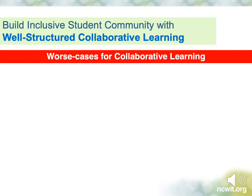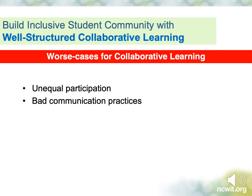So what are some worst-case scenarios? Why can't you just throw students into groups, give them a project, and let them work it out? First, some individuals may dominate the conversations and the work, while others may opt out and retreat — both behaviors are problematic for learning, student relationships, and a sense of belonging. Second, left alone, groups may fall into bad communication practices, creating unnecessary friction and conflict — interrupting, belittling, ignoring, or stealing contributions, just to name a few. No group work will be without conflict; we just want to minimize the unproductive and unnecessary stuff.